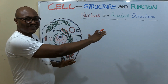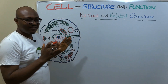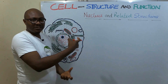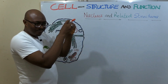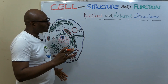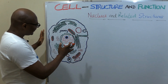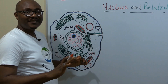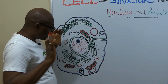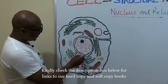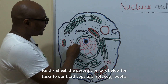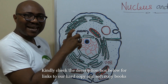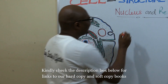We're dealing with the nucleus and related structures — related structures because they are all part of and an extension of the major function of the nucleus. Look at the cell: the nucleus is the largest cell organelle, as you can see here. It's the chief control center of the cell.